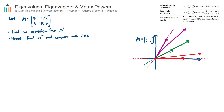The green vector stays on the span line but just stretches — by about a factor of two. The red and purple vectors both moved off their span lines. This green vector would be called an eigenvector of the transformation matrix M. An eigenvector means the vector doesn't move off its span line; it just stretches or shrinks. The factor by which it stretches or shrinks — in this case a factor of two — is the eigenvalue of that eigenvector.